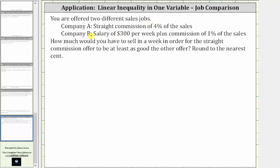You are offered two different sales jobs. Company A offers a straight commission of 4% of sales. Company B offers a salary of $300 per week plus commission of 1% of sales. How much would you have to sell in a week in order for the straight commission offer to be at least as good as the other offer? We're told to round to the nearest cent.